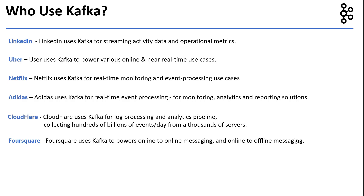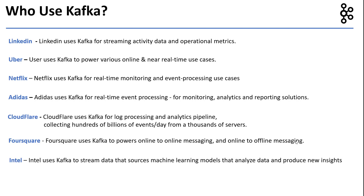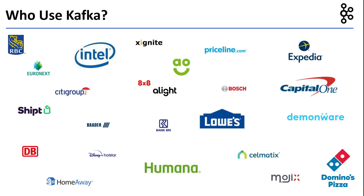Foursquare uses Kafka to power online-to-online messaging and online-to-offline messaging. Intel uses Kafka to stream data that sources machine learning models that analyze data and produce new insights. Expedia uses Kafka to drive their event-driven architectures. This was just a small sample of the companies using Kafka — there are hundreds more currently using Kafka and the number is increasing every day.